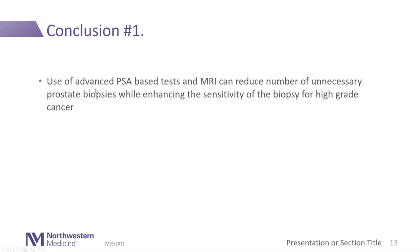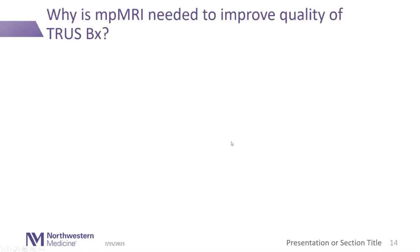Conclusion number one: as Dr. Catalona and the NCCN team have defined, use of advanced PSA-based markers — we use PHI, which is incredibly cost-effective and fast at Northwestern — and multi-parametric MRI can reduce the number of unnecessary prostate biopsies and enhance the sensitivity of detection of high-grade cancers.